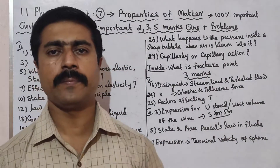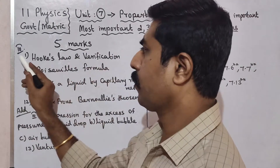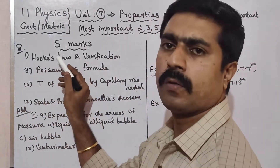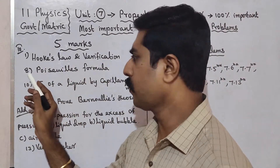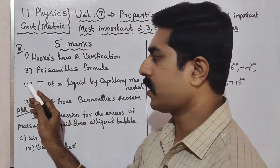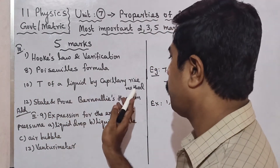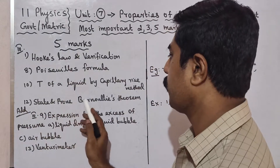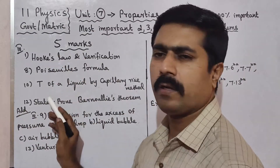Now 5-mark questions: 1st question — Hooke's law and its verification; 8th question — Poisson's formula; 10th question — surface tension of a liquid by capillary rise method; 11th question — state and prove Bernoulli's theorem. These four questions all category students must be prepared to do.